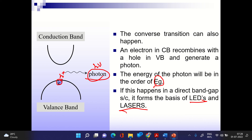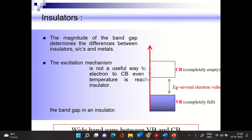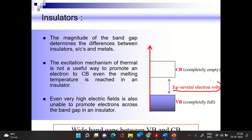The E vs k diagram — with energy on the y-axis and wave vector k on the x-axis — shows parabolic curves. The magnitude of the band gap is on the order of a few electron volts for semiconductors. The band gap magnitude determines the difference between insulators and metals.